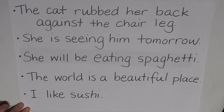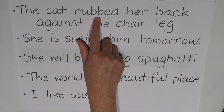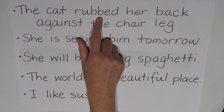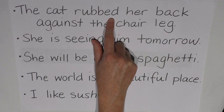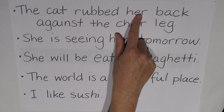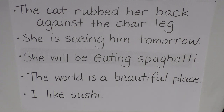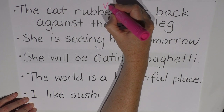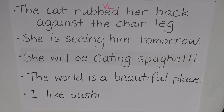Let's go through the first one. I'll do it nice and slowly so you can jump ahead and answer it before me. Number one: the cat rubbed her back against the chair leg. I think the first verb here is 'rubbed', because semantically it's something the cat is doing. I can also see that morphologically it's carrying the regular past form -ed, which means it happened in the past. Because it's carrying this morphological -ed and there's only one verb in this sentence, I'm going to say that this is a lexical verb.